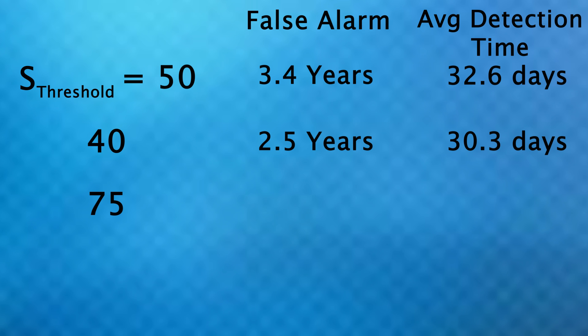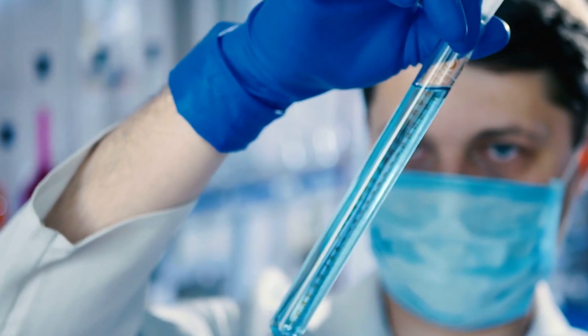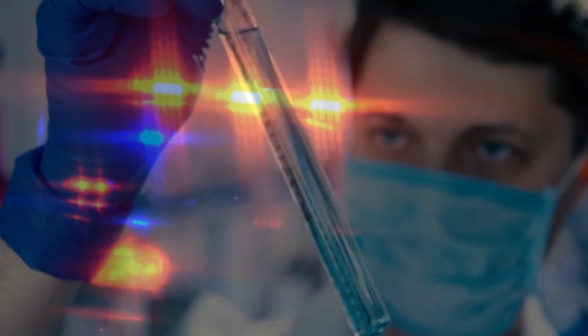If our threshold were 75, the false alarm would happen every 5.2 years, with an average detection time of 36.9 days, and at a threshold of 150, these would be our values. So depending on what the real-life situation is, we can move these thresholds around to get the kind of results that are optimal.